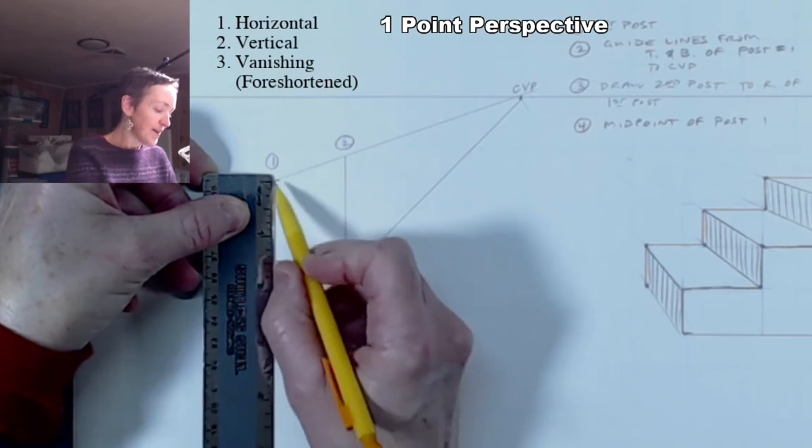Now, step four is to find the midpoint of post one. So find the midpoint of post one. We already did that as we were measuring it, but if you didn't remember to do that, go ahead and do a really careful measurement. The more accurate you are here, the better this is going to work out. So you're finding the halfway point.